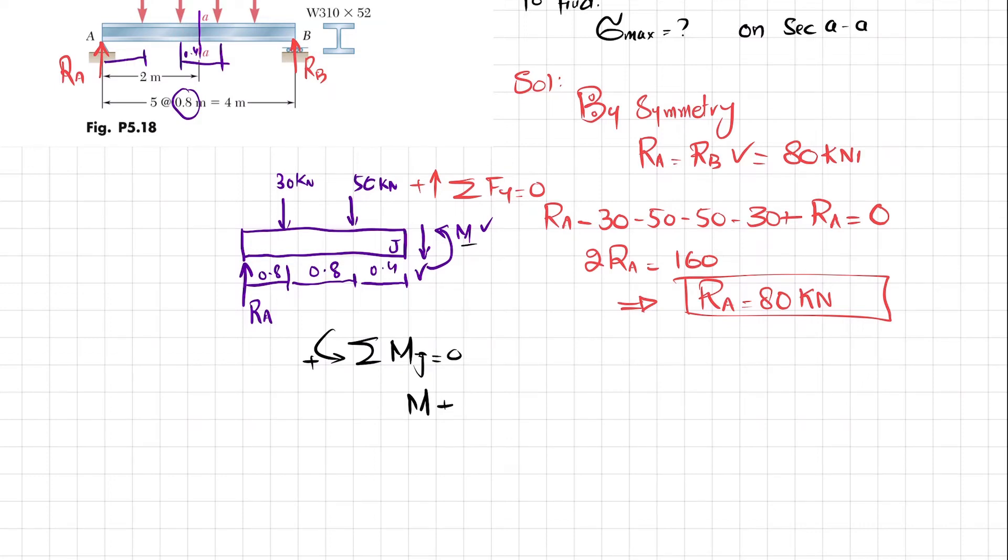So we will write 50 into 0.4, and it is producing a counterclockwise moment, so it will be positive. Similarly, this force, 30, into perpendicular distance is 1.2, and it is also producing a counterclockwise moment, so I will write it plus 30 into 1.2.